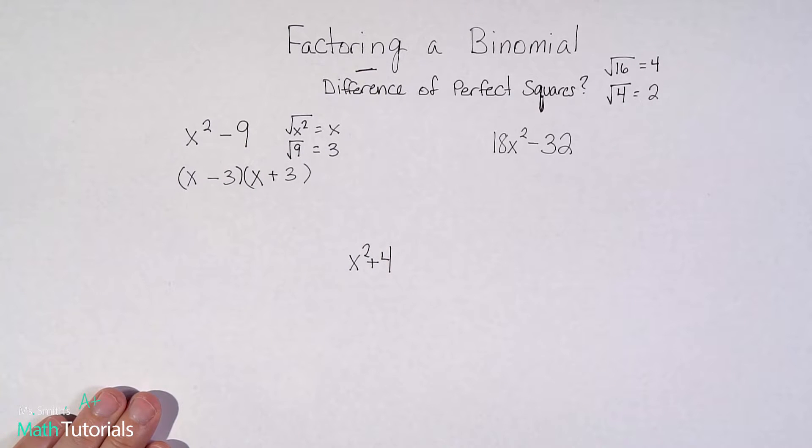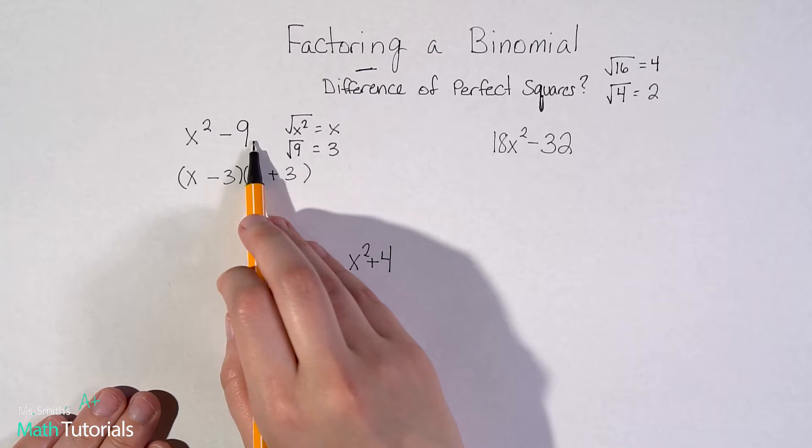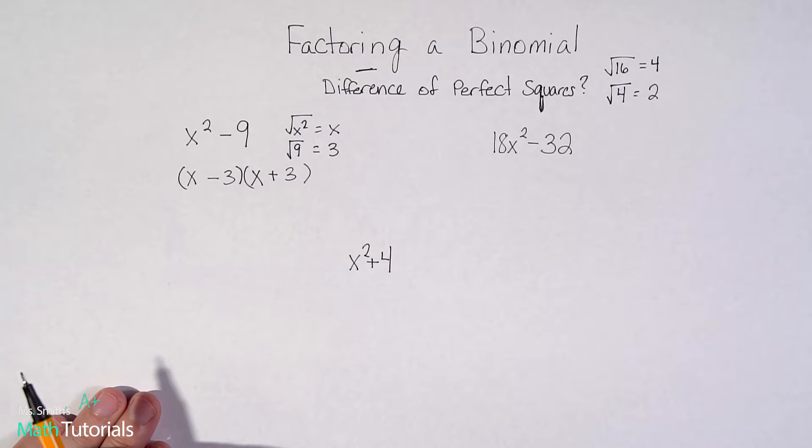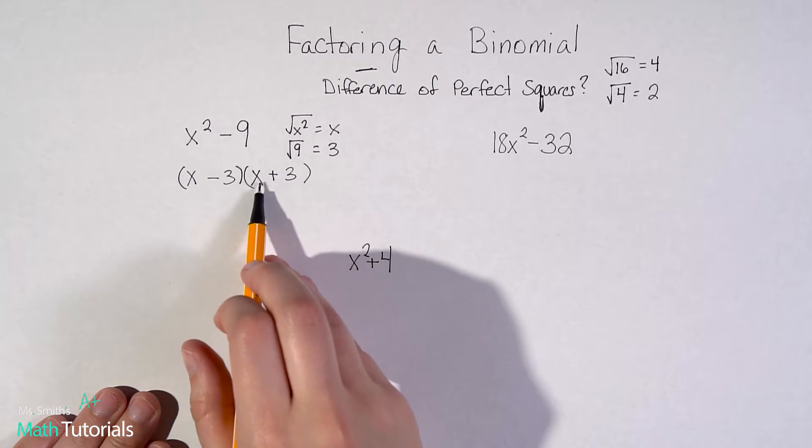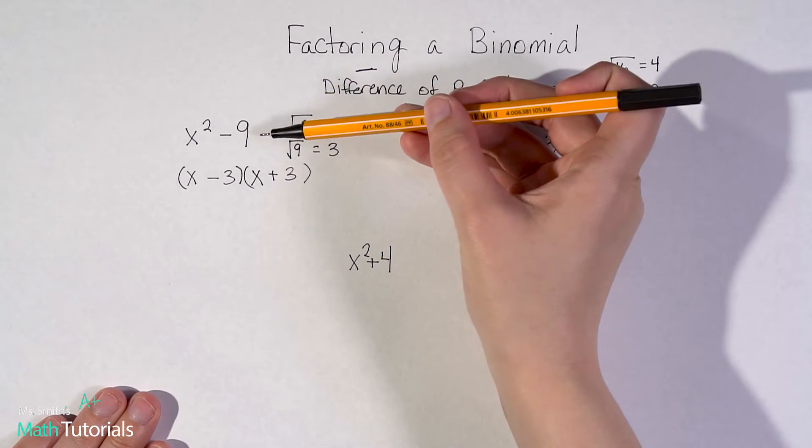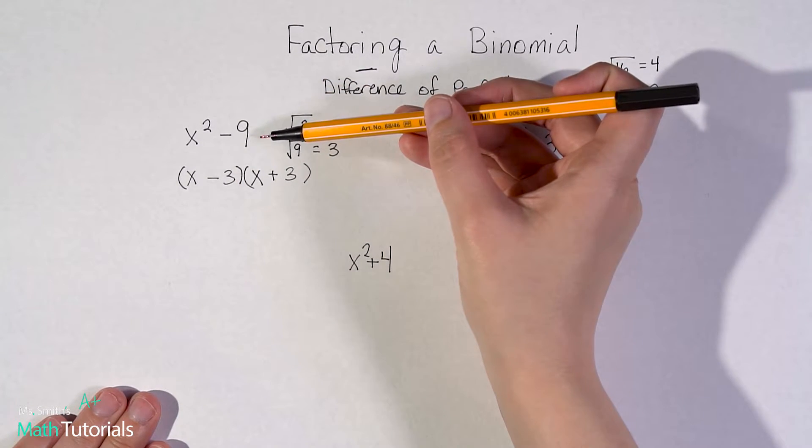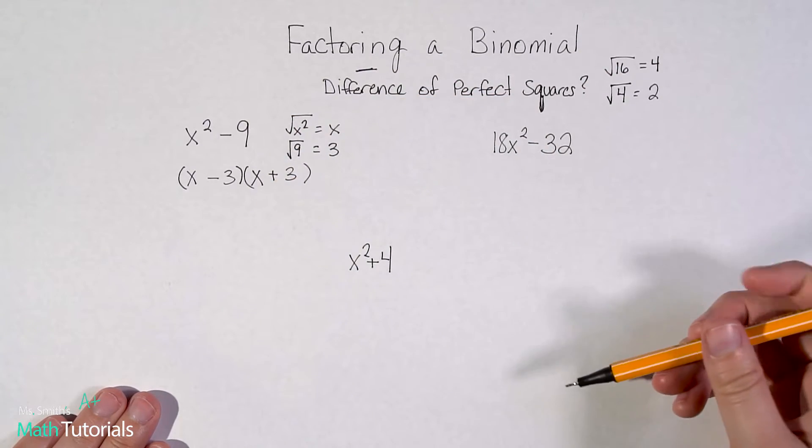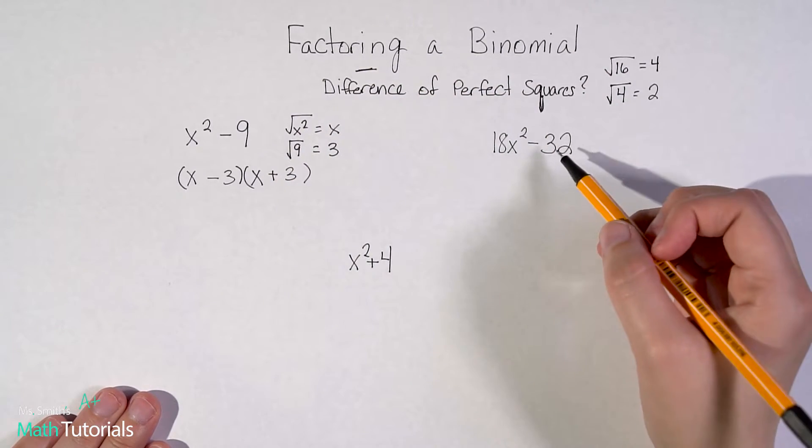That's as far as we can take this because this is an expression. There's no equal sign. We'll get to that in the next video. What happens if there's an equal sign? We'll handle that. But for now, this is just an expression. So this is as far as it can go. If I were to foil this back, you should get x squared minus nine. So that's it. That's as simple as these are. Let's run through another example.